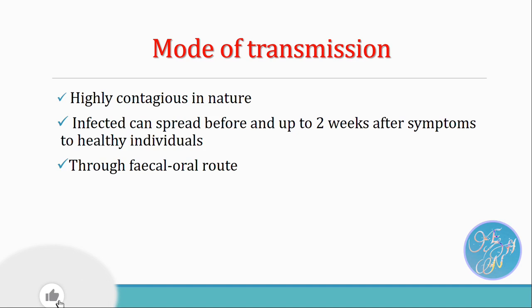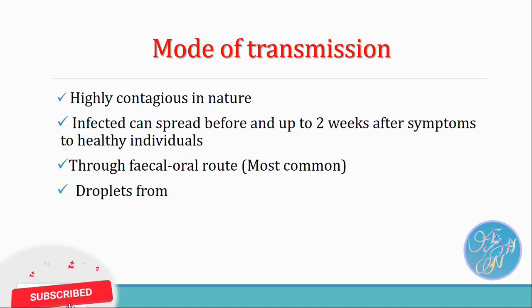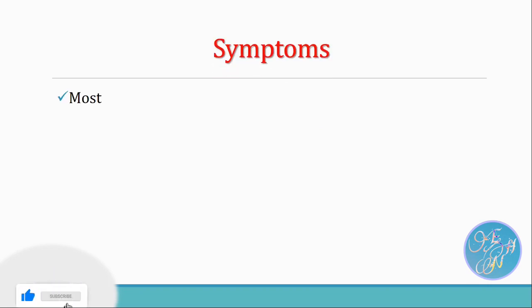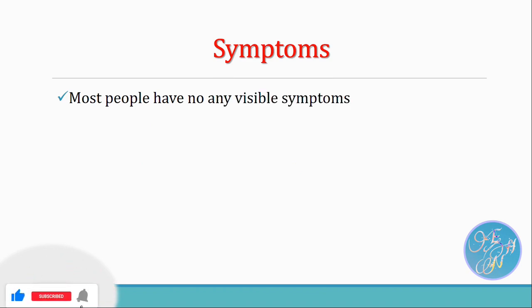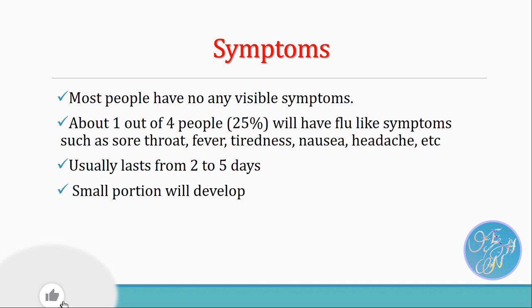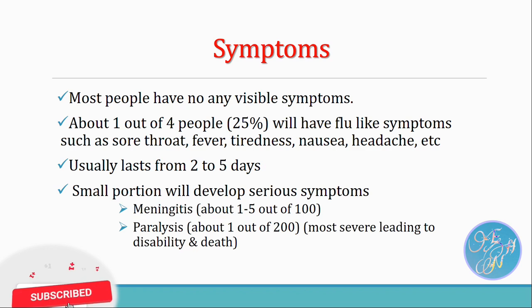Regarding the symptoms of polio — generally, most infected people don't have any visible symptoms. Just 25% of infected individuals develop flu-like symptoms such as sore throat, fever, tiredness, nausea, headache, etc. These symptoms usually last from 2 to 5 days. However, a small portion of infected people will develop serious symptoms: meningitis and paralysis, with paralysis being the most severe symptom leading to disability and death. Meningitis occurs in about 1 to 5 out of 100 infected cases, while paralysis is experienced in about 1 out of 200 cases.